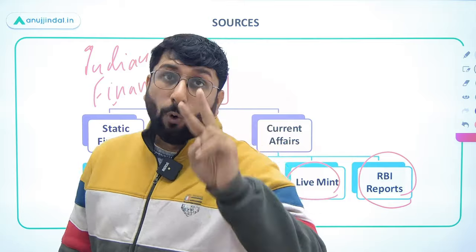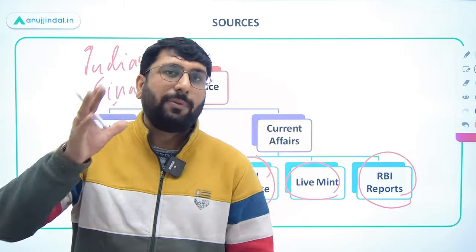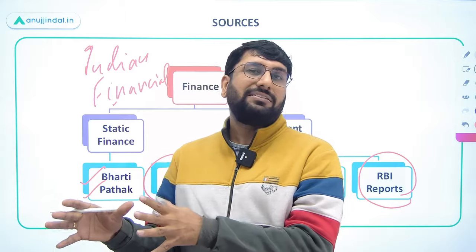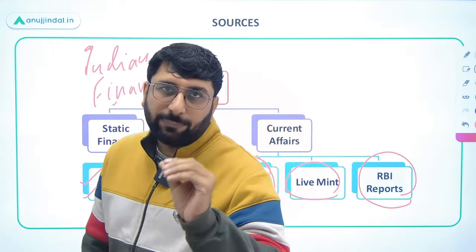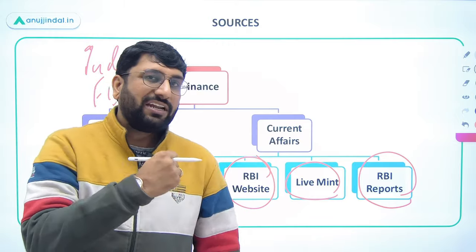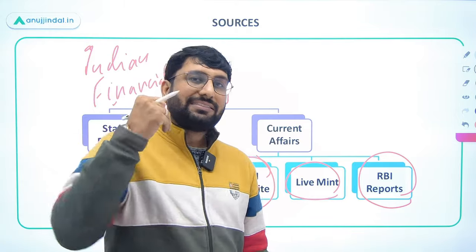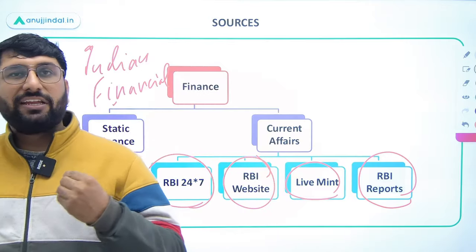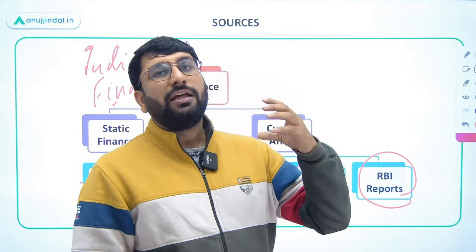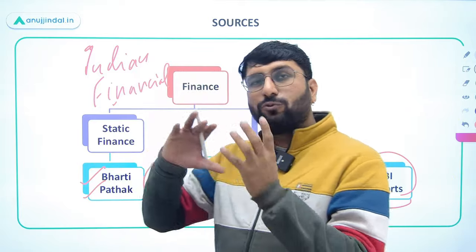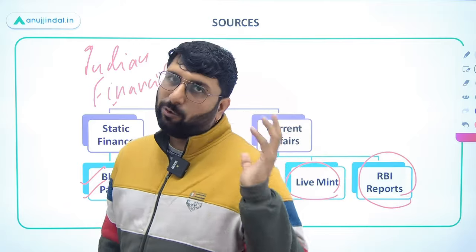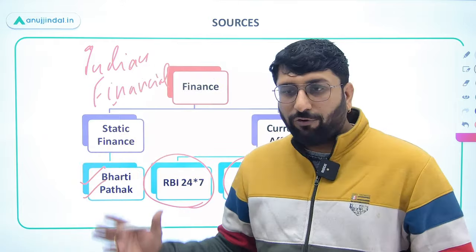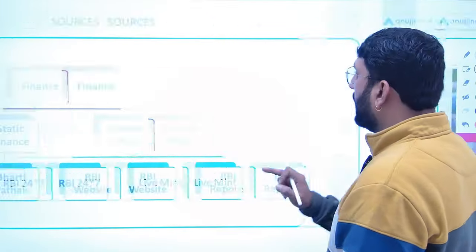This is how you can cover your static portion and current affairs portion — both elements are equally important. Do not have the mindset that current affairs won't matter, because in descriptive questions also, the type of questions being asked require you to write some facts, some schemes. If you only write static pointers without quoting facts, you will end up scoring low marks. To score very high marks, you must combine your static answer with examples from regulatory schemes, government schemes, and recent changes in the financial sector.